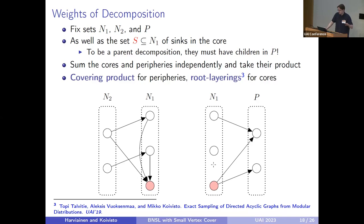How to compute the weight of the parent decomposition? We fix those sets N1, N2, and P, and also pick a subset of the vertex cover that should be the sinks of the core. For this to be a parent decomposition, this subset of the vertex cover must have children in P by definition. Similar to the optimization case, we can sum over the structures of the cores and the structures of the peripheries independently, and then take the product by combining them. This corresponds to computing a covering product for the peripheries and using dynamic programming over the so-called root layerings for the cores.